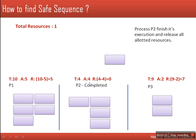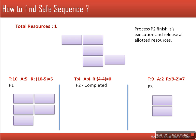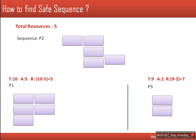Before the completion of P2, we are having only 1 resource available. When P2 completes, all of its resources will be released, so now we are having a total of 5 resources available. Since P2 is completed, we write it first in our safe sequence. Now P1 needs 5 more resources and P3 needs 7, and currently we are having only 5, so the available resources can satisfy the requirement of process P1.